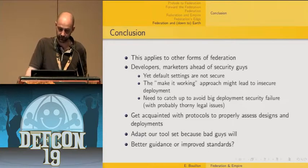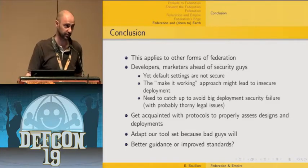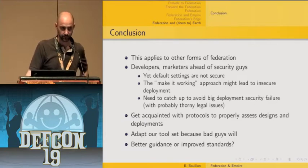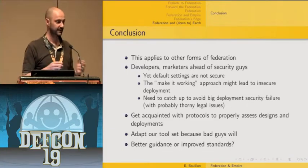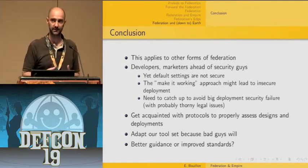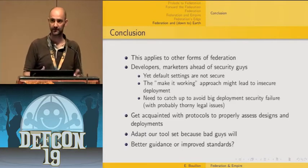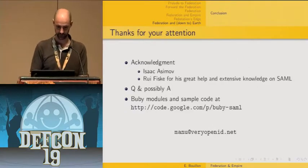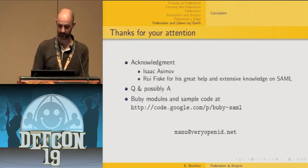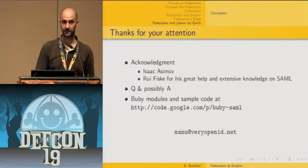We need to get acquainted with the involved protocols to properly assess the design and deployment of such a federation, and adapt our tool sets — because bad guys probably will. It would also be helpful to have better guidance or improved standards on how to protect against this kind of issue, because today it relies entirely on diligent administrators and developers implementing the checks. A common solution would also make assessment far easier. Thanks to my colleague Rui Fisk for his help and extensive knowledge on SAML. Questions can be taken now or in Room 2 Q&A. Thanks for your attention.